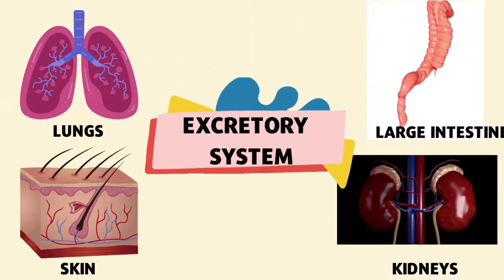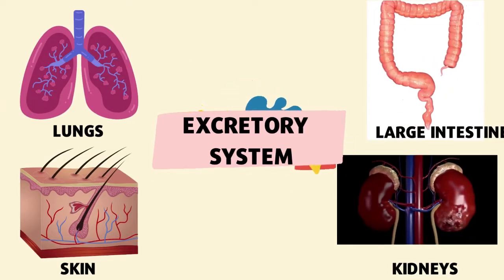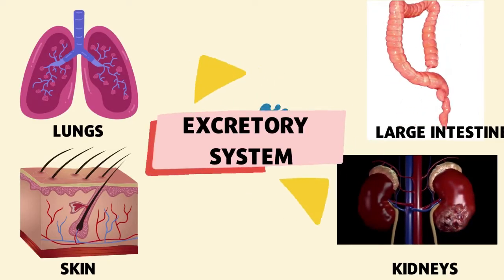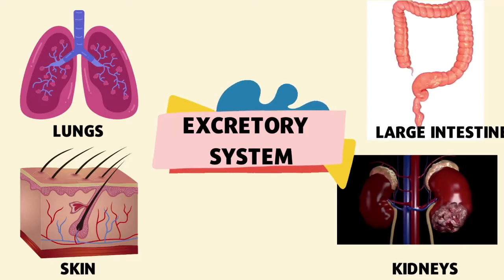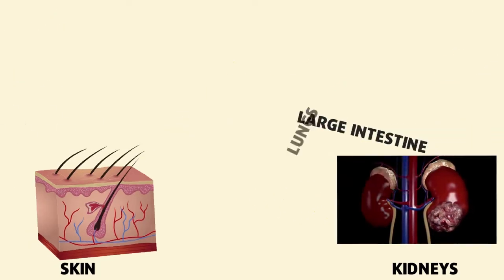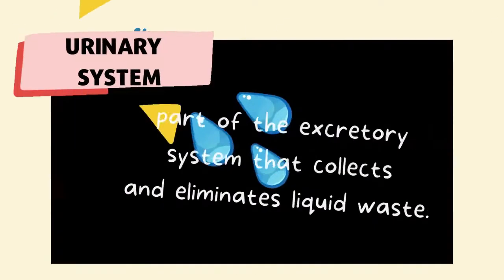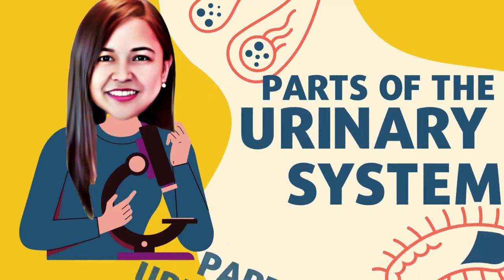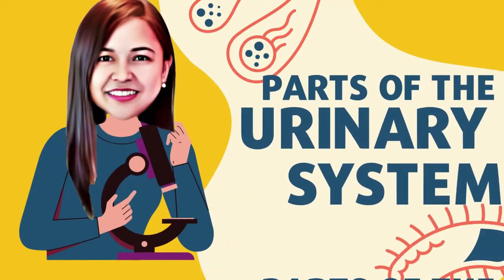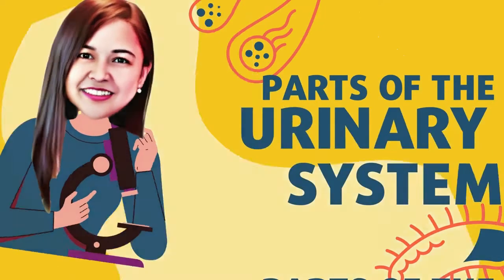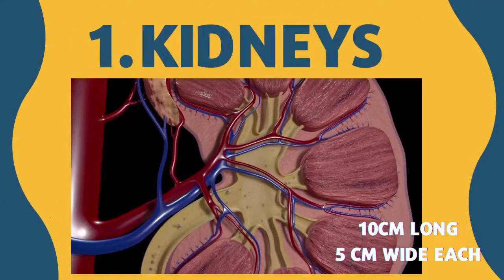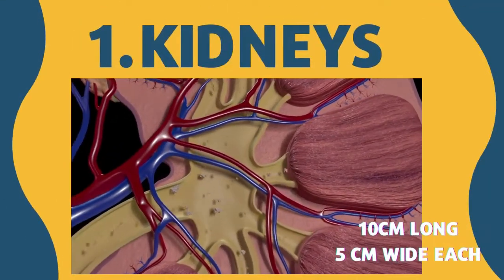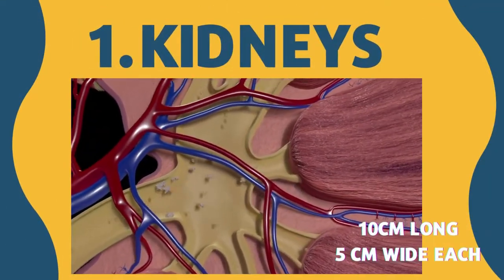The fourth one is the urinary system, which is the part of the excretory system that collects and eliminates liquid wastes. It consists of the left and right kidneys, the ureters, the urinary bladder, and the urethra. Now let us discuss these one by one.